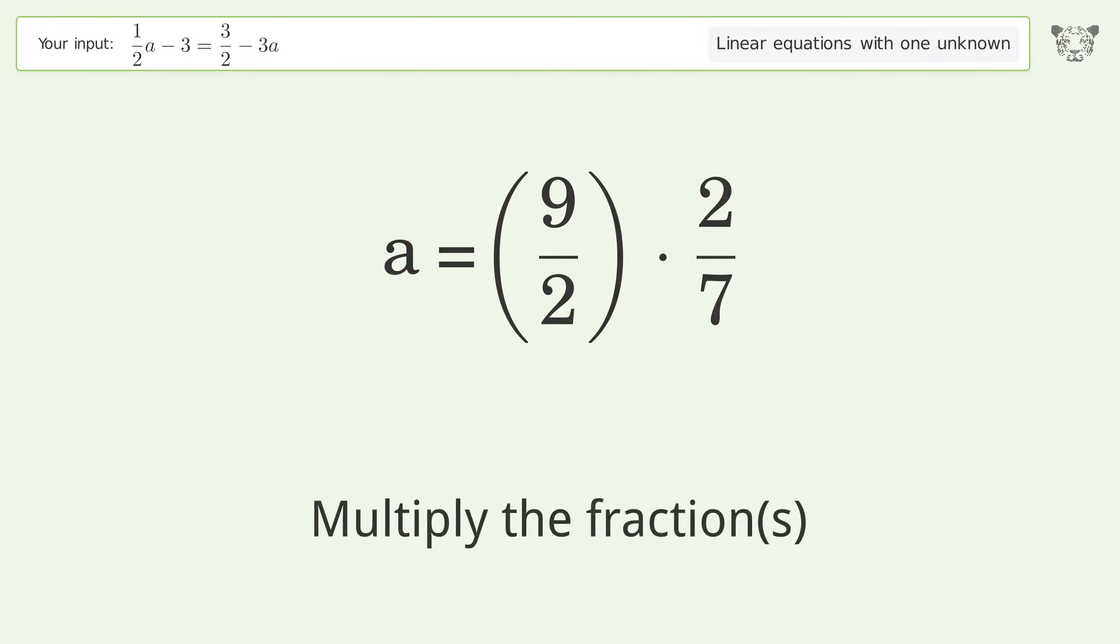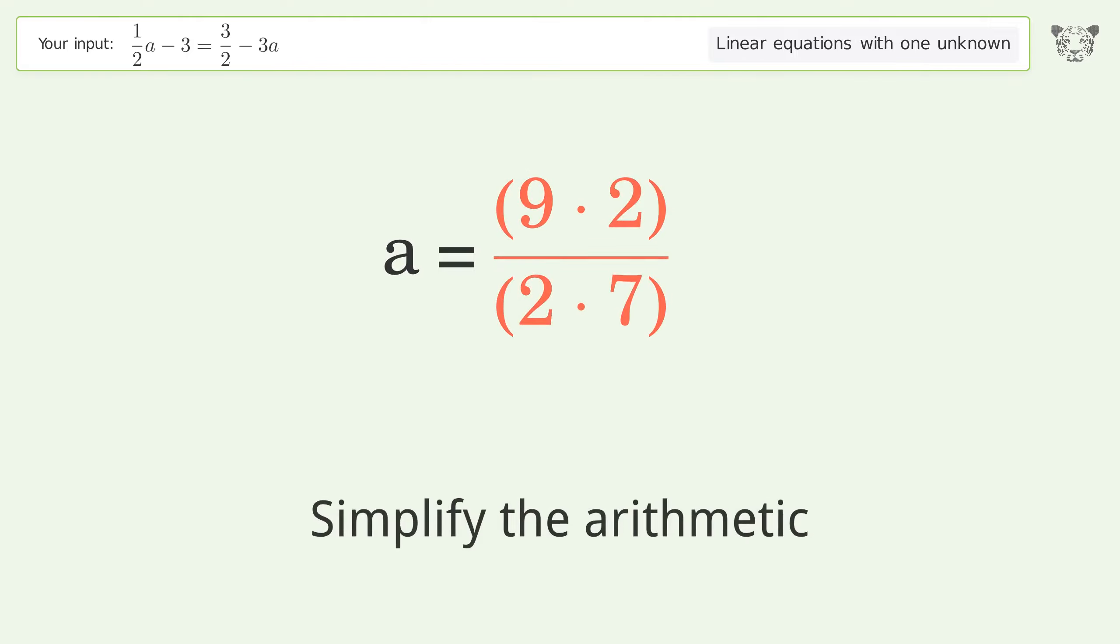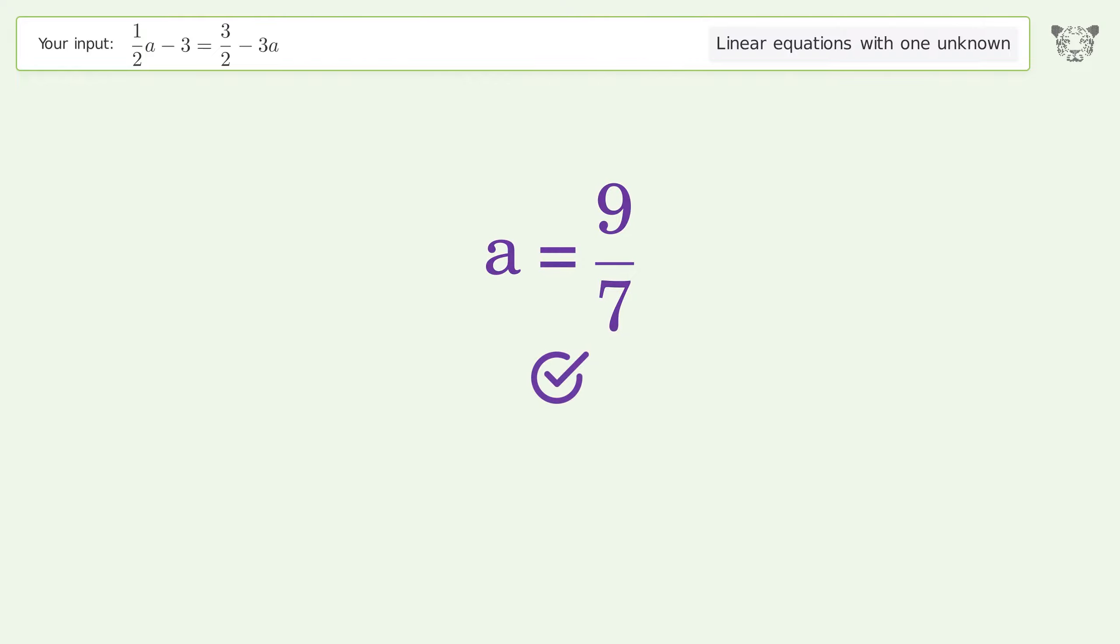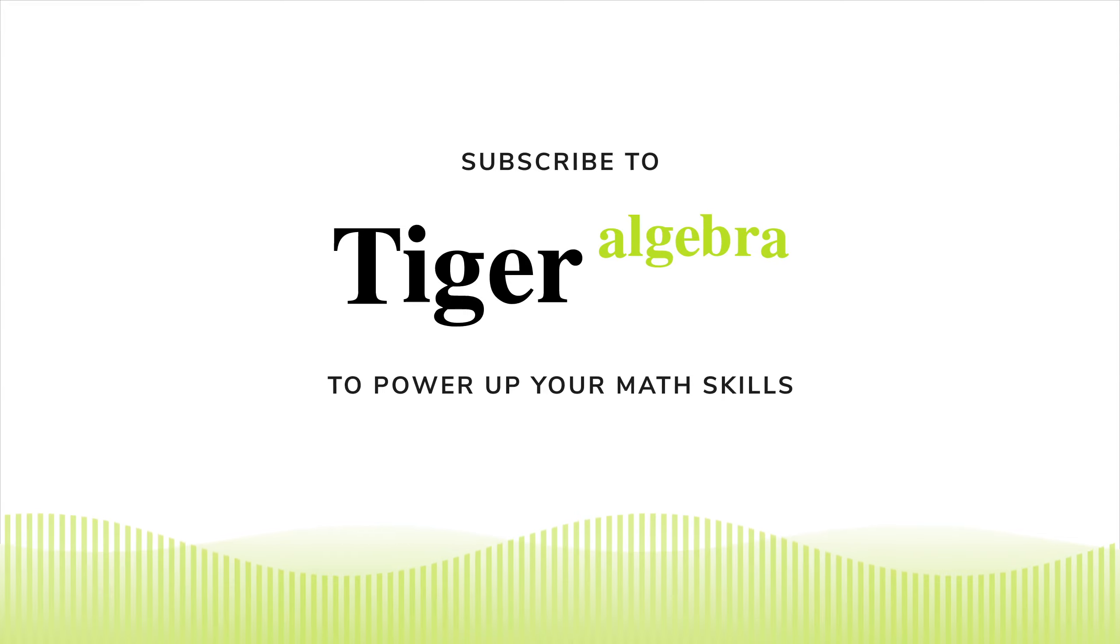Multiply the fractions. Simplify the arithmetic. And so the final result is a equals nine over seven.